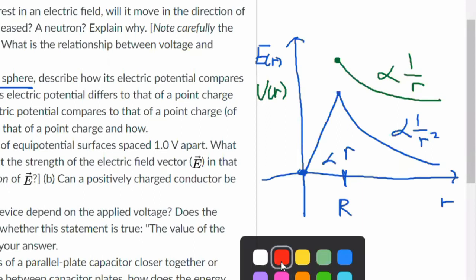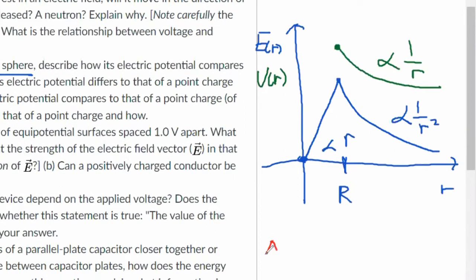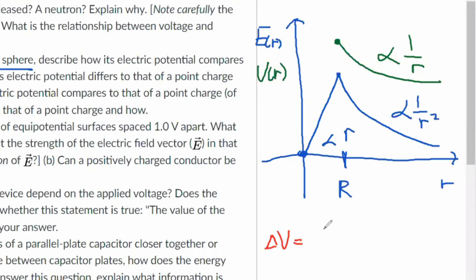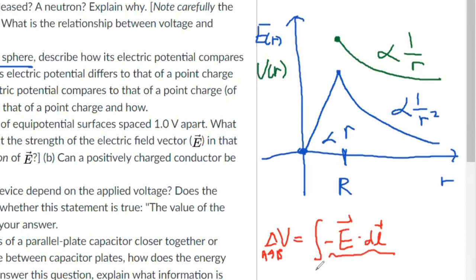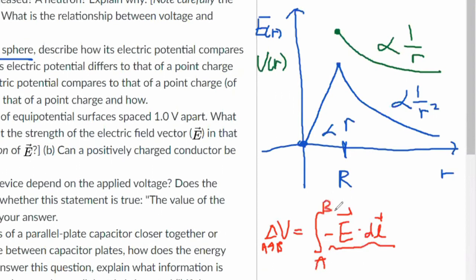The definition of voltage is given by change of voltage is the integral of minus E dot dl. As you go from point A to B, the change of voltage is integral of this quantity from A to B. And that only gives you the change in voltage.